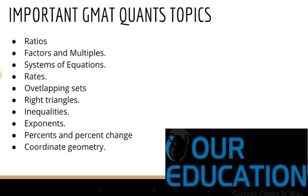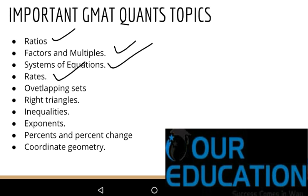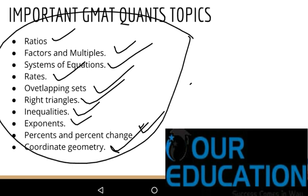The important GMAT quantitative topics are: ratios, factors and multiples, systems of equations, rates, overlapping sets, right triangles, inequalities, exponents, percents and percent change, and coordinate geometry. After doing a thorough analysis of GMAT past question patterns and the weightage of questions, I have identified these as the most frequently tested topics.